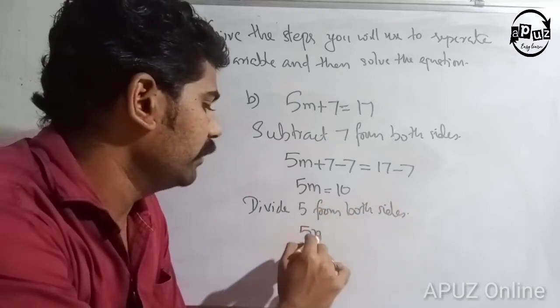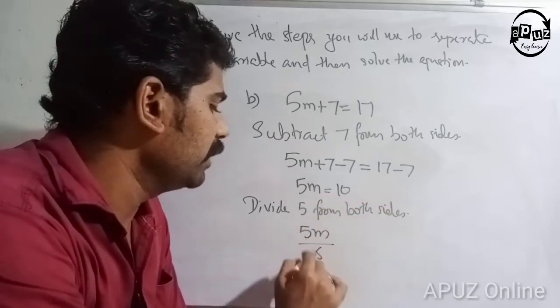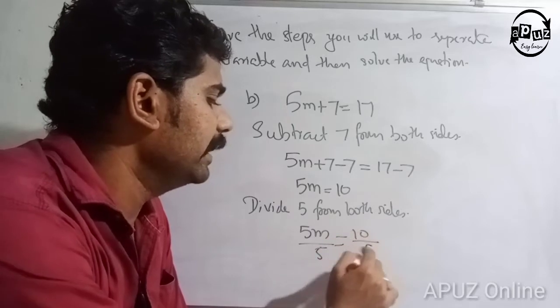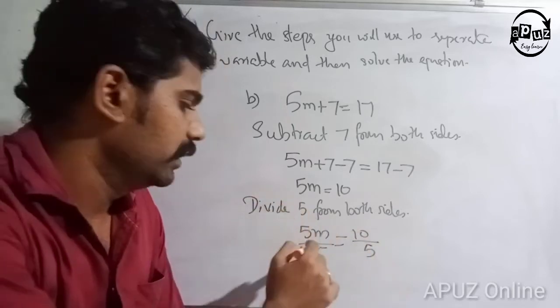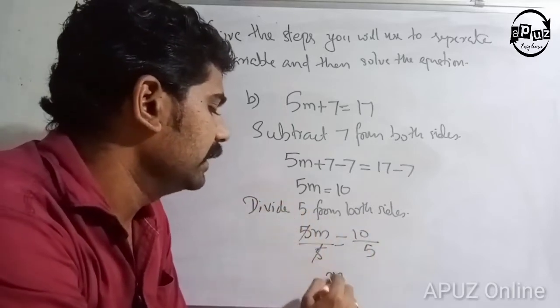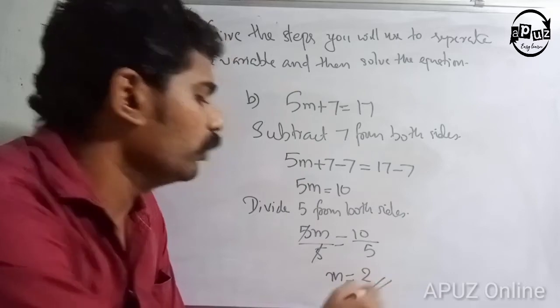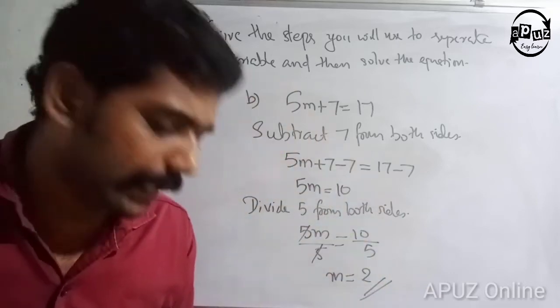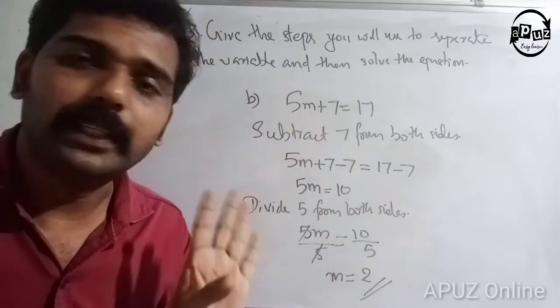5m is equal to 10. Divide by 5. The 5s cancel, so m is equal to 2. That is the answer: 2.